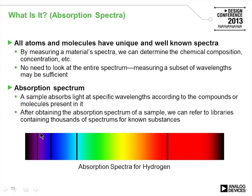Molecules and atoms have unique spectra. This shows the absorption spectrum of hydrogen. If you pass a broad bandwidth of light through hydrogen and analyze it, you would notice distinct lines that occur at specific spots in the light spectrum. This is different for every different type of atom or element, so by looking at where these spectral lines occur, you can tell exactly what that particular gas or liquid is.